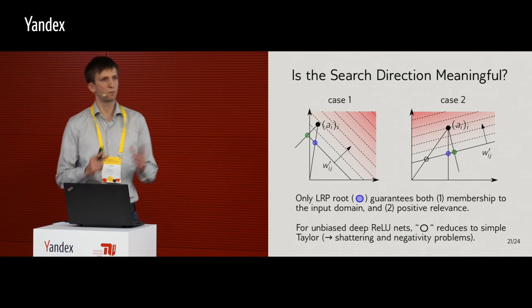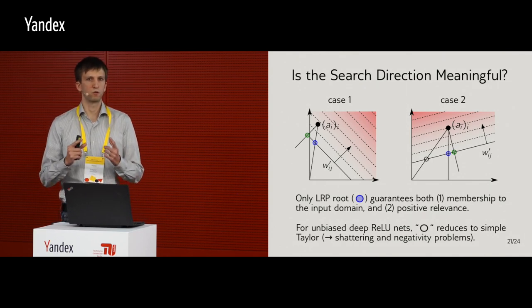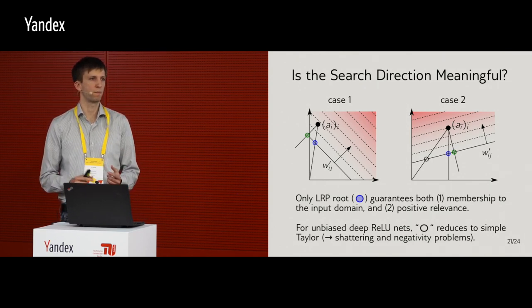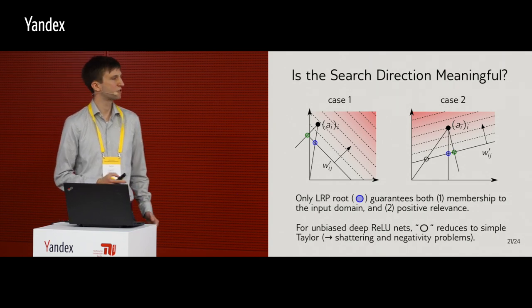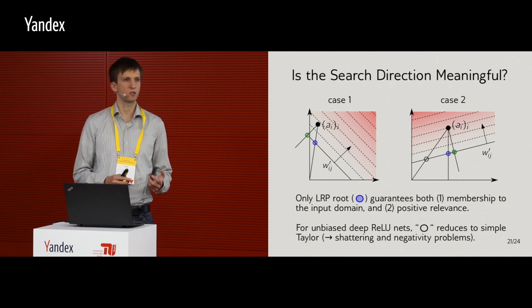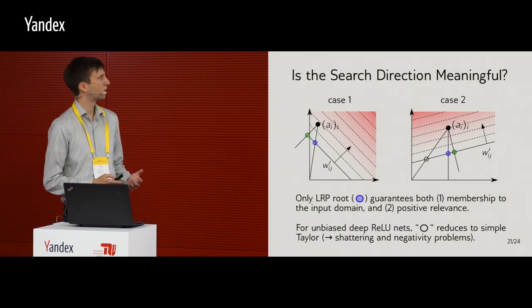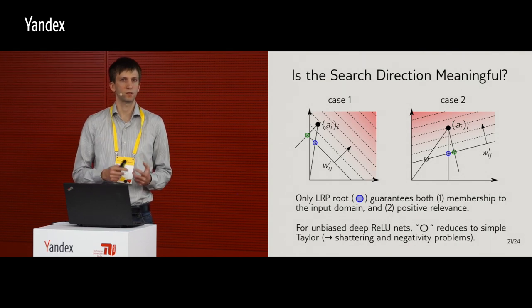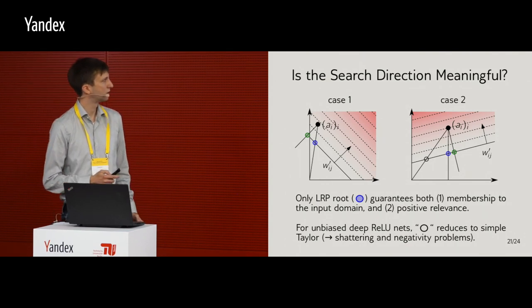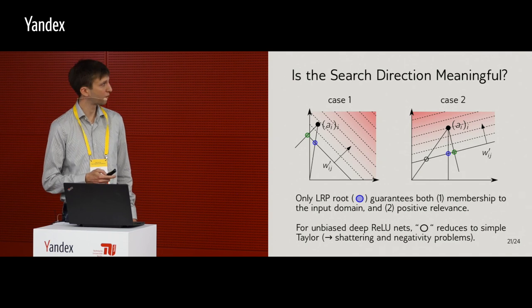So, that's the Taylor interpretation. So, there was the LRP interpretation, where we redistribute the relevance proportional to the excitation of the neuron to the next layer, and then there is the deep Taylor interpretation of this algorithm, where we take roots within the input domain and that guarantee positivity of the relevance.